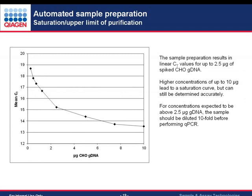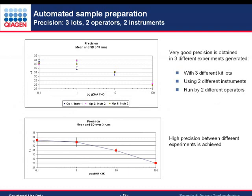The upper end of the purification range is equally important. For samples like cell culture supernatant with very high amounts of CHO DNA, we tested up to 10 micrograms of genomic DNA and confirmed we are still getting reliable results — signal intensity increases, CT values go down, and the 10 microgram amount is still reliably detected with no risk of generating false data.